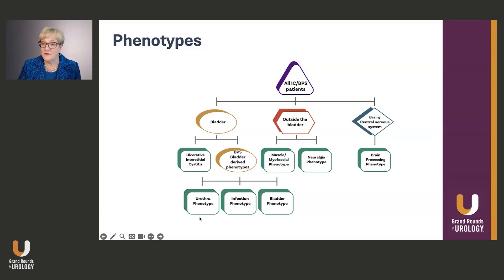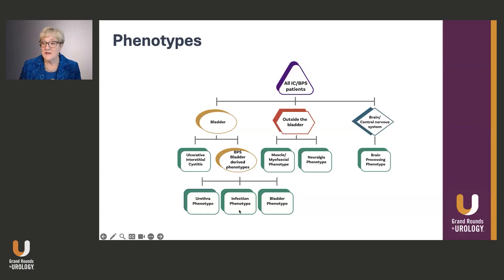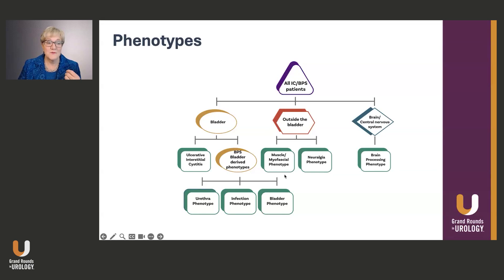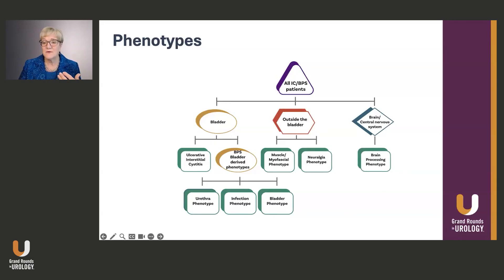The next group is the urethral phenotype, where patients have symptoms focused primarily on the urethra. We have the infection phenotype, which involves bladder-centric symptoms with a well-documented history of recurrent urinary tract infections. All other bladder-centric patients would be called the bladder phenotype. From outside the bladder, the first would be the muscle or myofascial phenotype, including people with pelvic floor dysfunction and muscle tenderness. The second is the neuralgia phenotype, typically pudendal neuralgia, where nerve pain is the key feature.